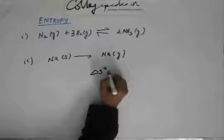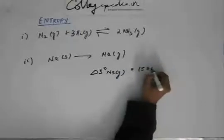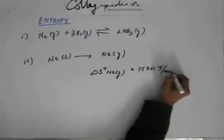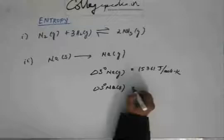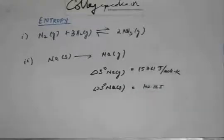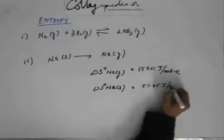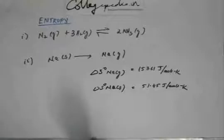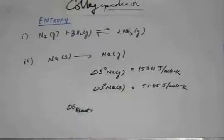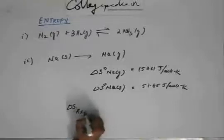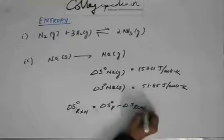And if they give you data, delta S naught of gaseous sodium is 153.61 joule per mole kelvin and delta S naught of sodium solid is equal to, suppose it's 51.45 joule per mole kelvin.